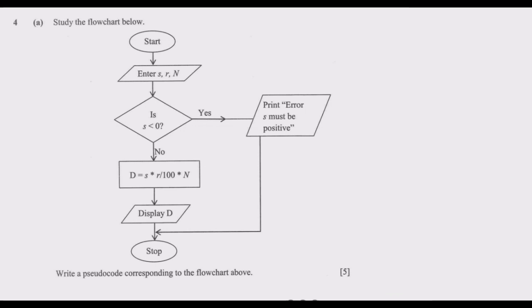Question 4: study the flowchart below. We have: Start, then Enter s, error, then n, then check if s is less than 0. If yes, print 'Error: s must be positive.' If s is greater than 0, we proceed to calculating the value of d using the given function, then display d, then stop.